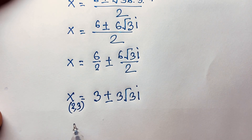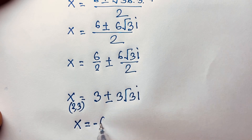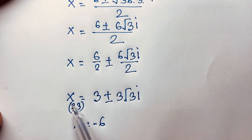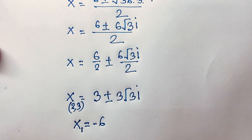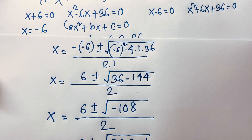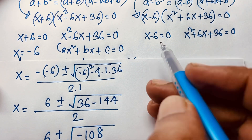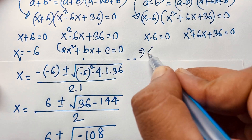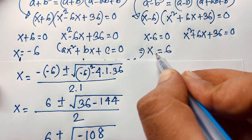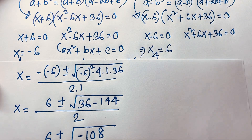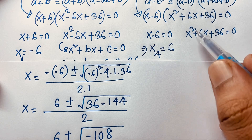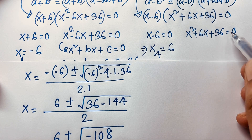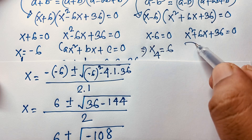From Case 2, x - 6 = 0 gives x₄ = 6. This is the real root we identified earlier.